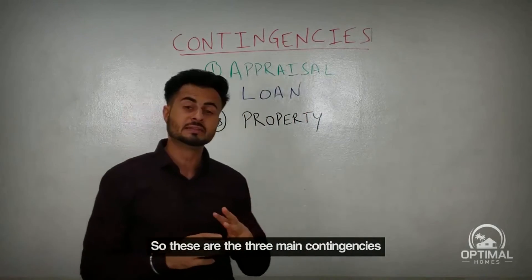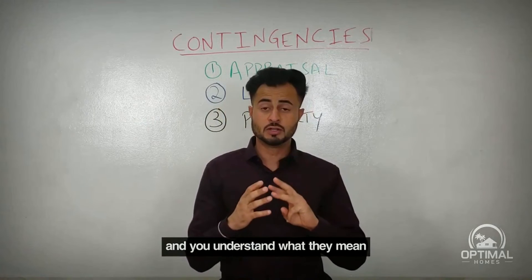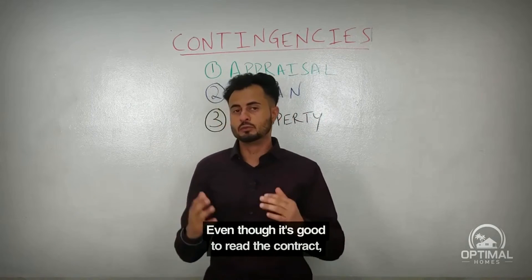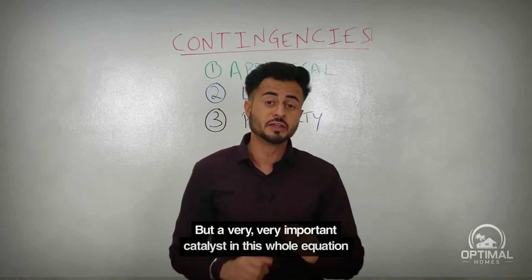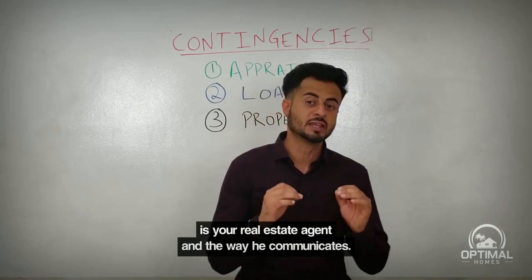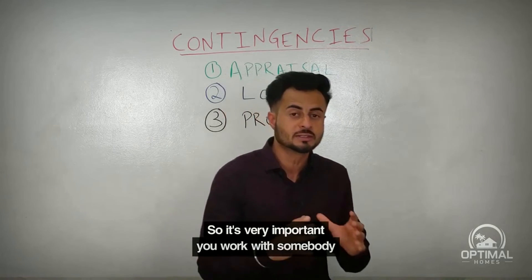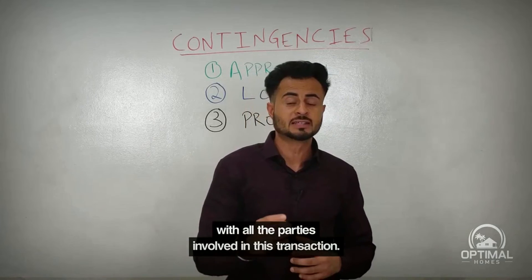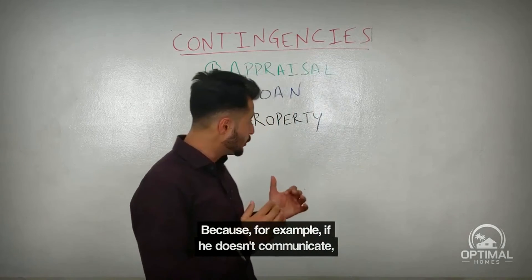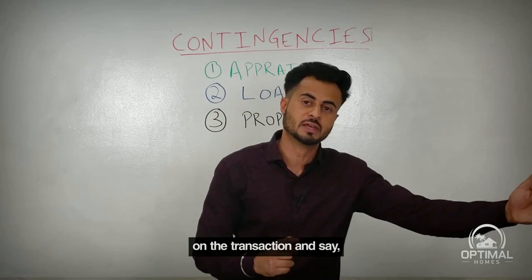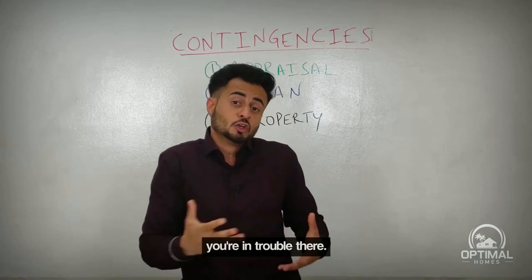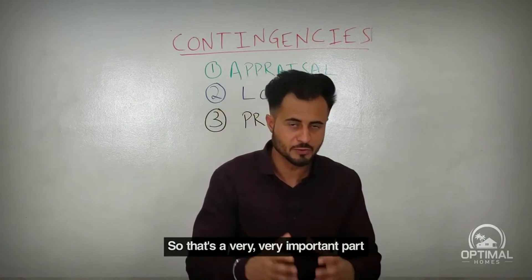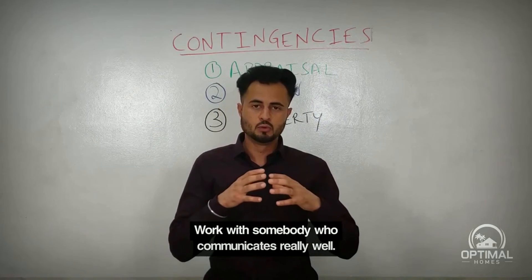These are the three main contingencies. If you understand them and apply them correctly, you're good to go. You don't need to read the whole contract verbatim, even though it's good to read it. A very important catalyst in this whole equation is your real estate agent and the way he communicates. It's very important to work with somebody who understands how to write these contingencies and communicate with all parties involved. If your agent doesn't communicate correctly with the loan officer and removes a contingency prematurely, you're in trouble. The same applies with the appraisal — removing it too early could cause a real mess.